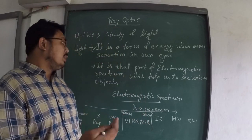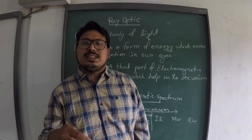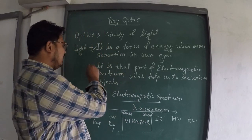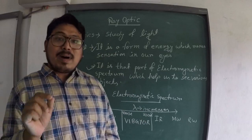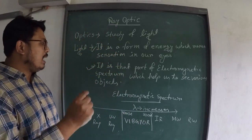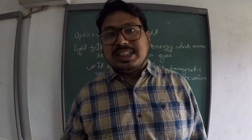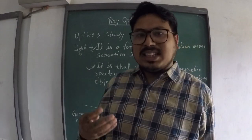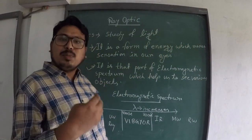As we come to class 12, we need to change our concept a little bit. In the second definition I have written: light is a part of the electromagnetic spectrum. It is a part of the electromagnetic spectrum which helps us to see the objects around us.